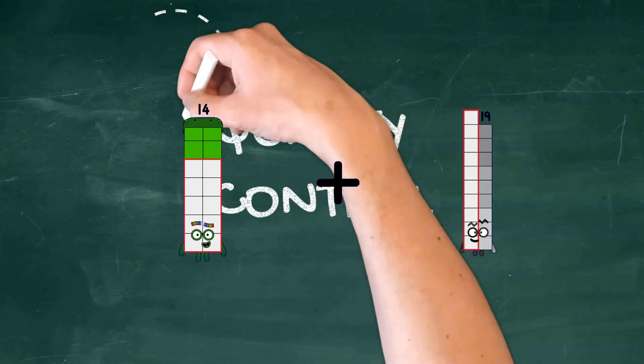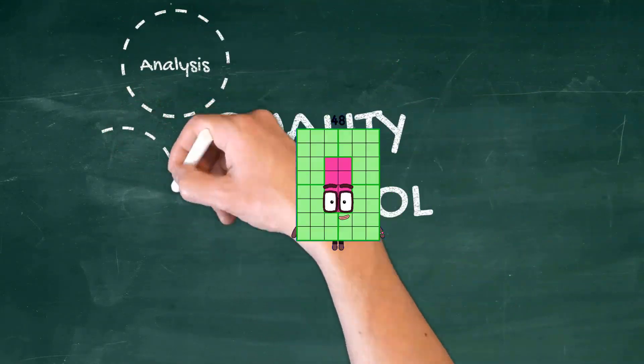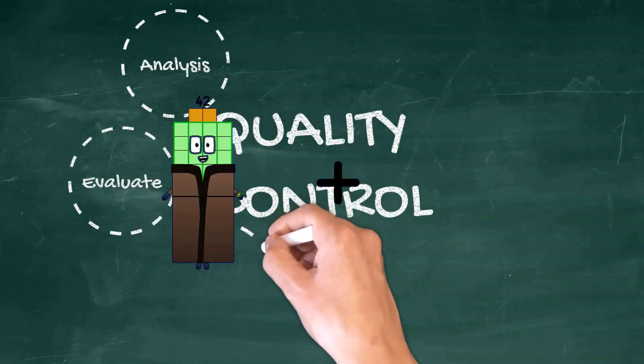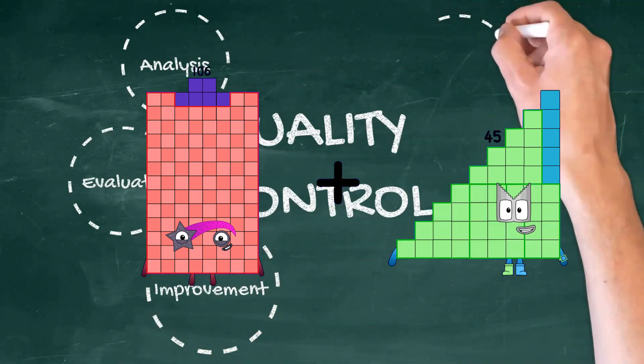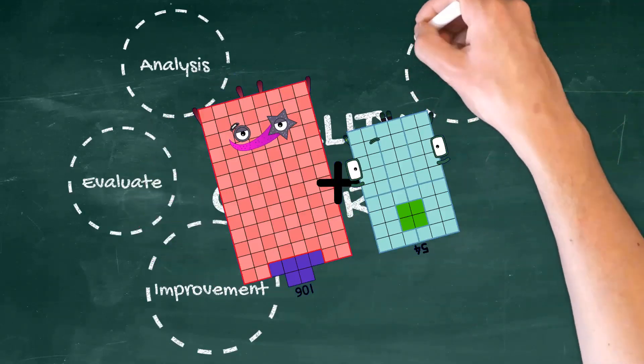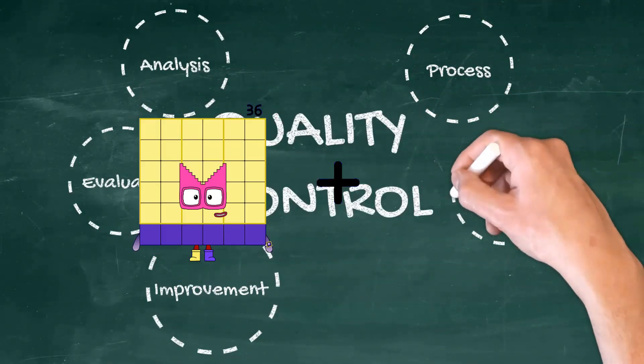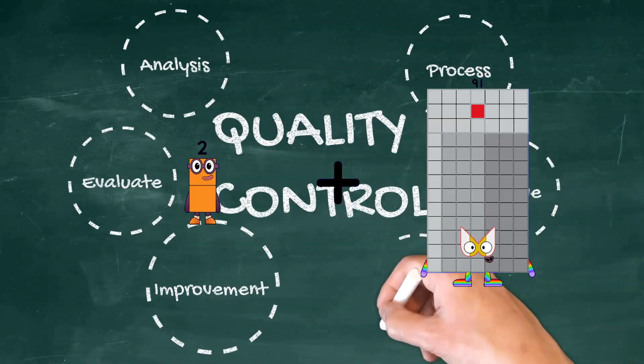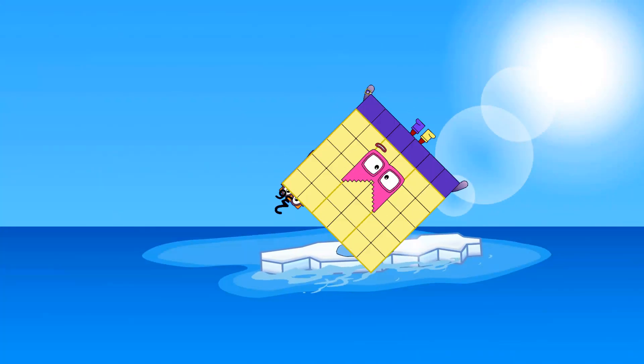14 minus 34 equals 48. 106 minus 54 equals 160. 2 minus 36 equals 38.